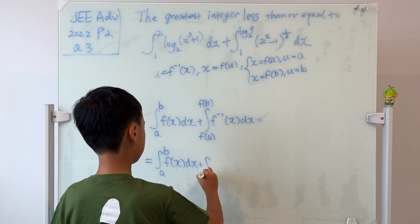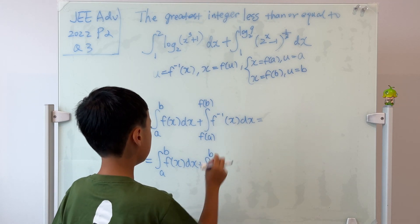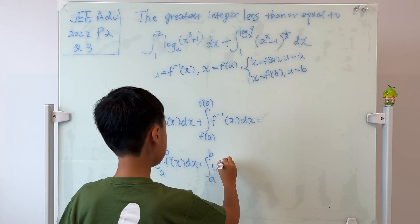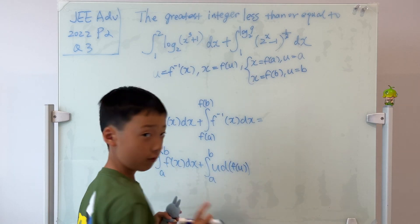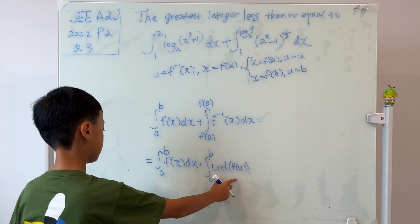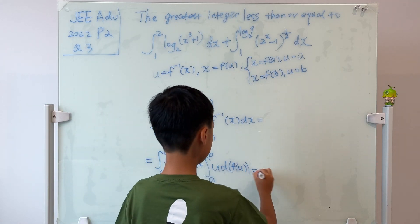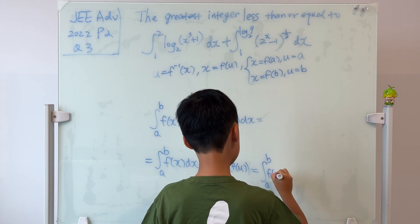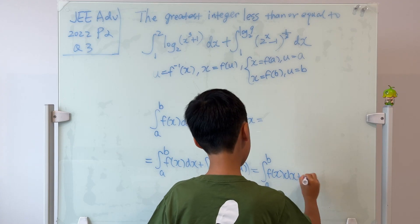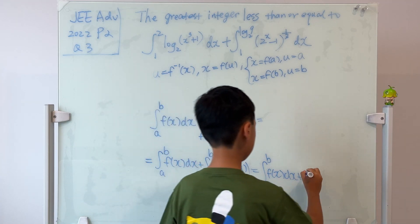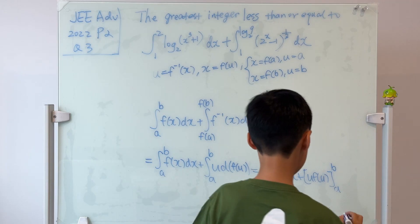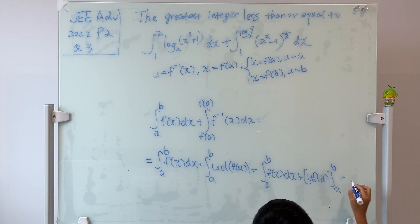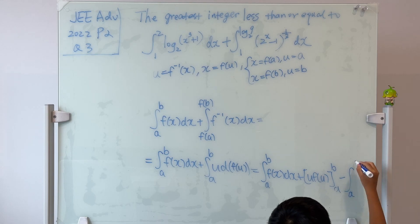Plus the integral from a to b, u, and then dx is just df(u). And this is in standard form of integration by parts, so this is equal to the integral from a to b of f(x) dx. Add it with, this is just u times f(u), plug in the values from a to b, and then subtract an integral from a to b of f(u) du.